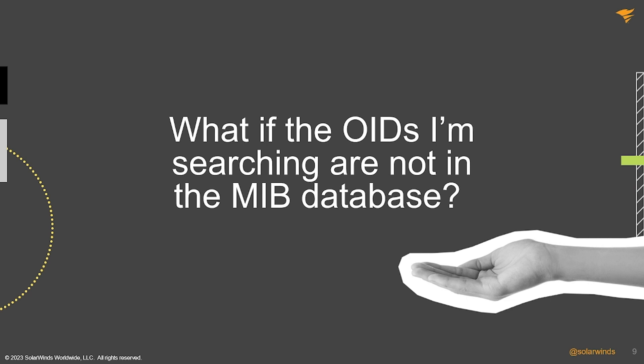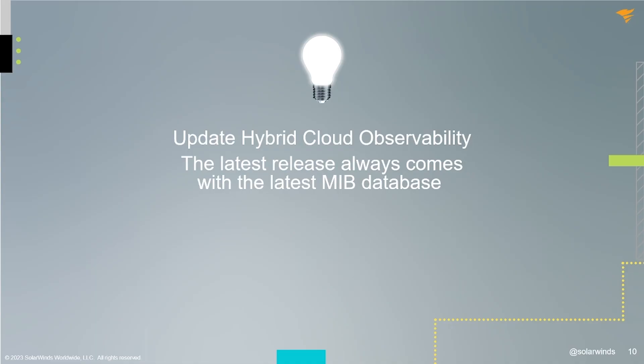To resolve that, try to update your hybrid cloud observability with a new and updated SolarWinds MIB database. Every new release of hybrid cloud observability comes with an updated MIB database. It is updated every few weeks and can be downloaded from the customer portal or installed directly through the web console if your hybrid cloud observability server is internet enabled.